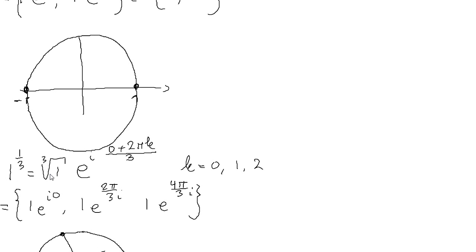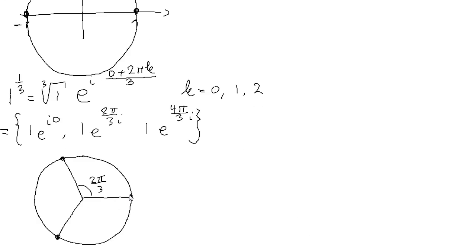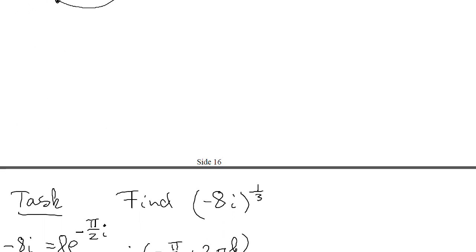For the third root of 1, we do exactly as above using the general formula, but here n equals 3, so we consider three different values of k: namely 0, 1, and 2. Inserting these three values into the general formula gives three values, which we can describe in the complex plane. The radius equals 1 in all cases. The first root has angle alpha equal to 0, the second has alpha equal to 2π/3, and the third has angle 4π/3.